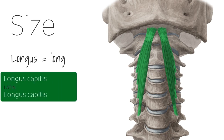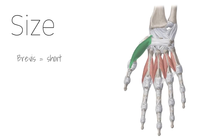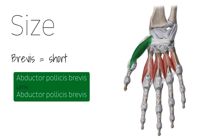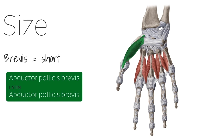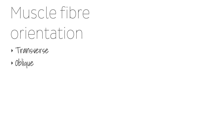For example, the longus capitis muscle, which is a long muscle of the head and neck, or the abductor pollicis brevis muscle, which is a short muscle of the thumb. Muscles can also derive their names from the orientation of their muscle fibers. The terms used to describe fiber orientation include transverse, oblique, and rectus.